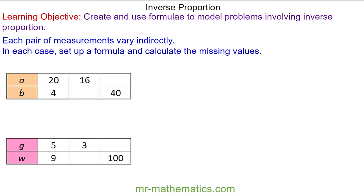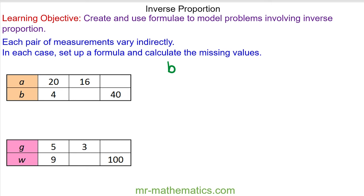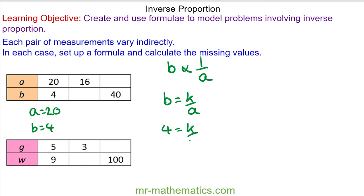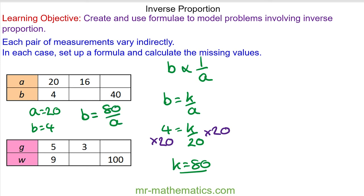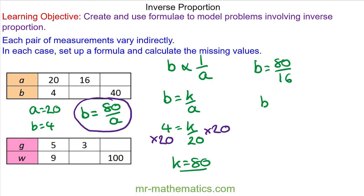Okay, let's try a couple more questions. Each pair of measurements varies inversely. Try to set up a formula for each pair and use this formula to calculate the missing values — you can pause the video and resume when you're ready. For question a, b is inversely proportional to a. We can model this using k. Substituting in b equals 4 when a equals 20, then multiplying both sides by 20, k is equal to 80. So our model is b is equal to 80 over a, giving b is equal to 5.